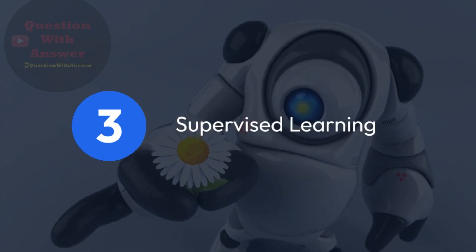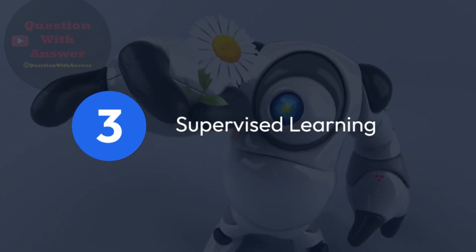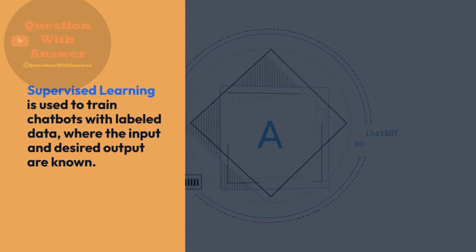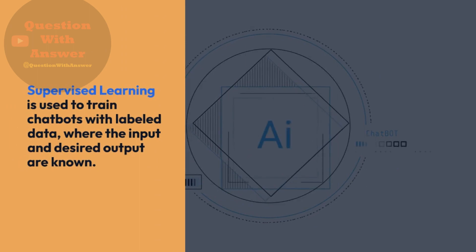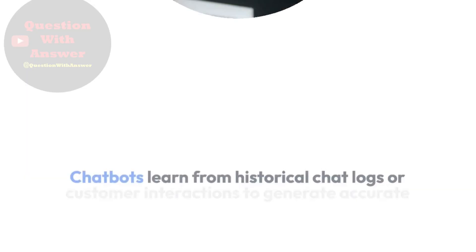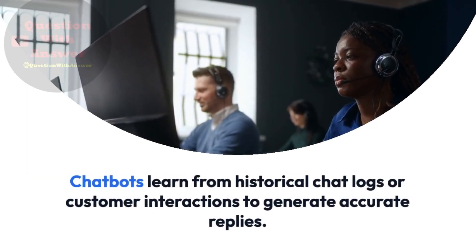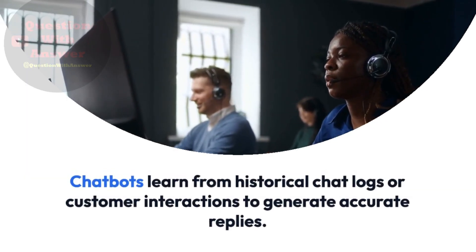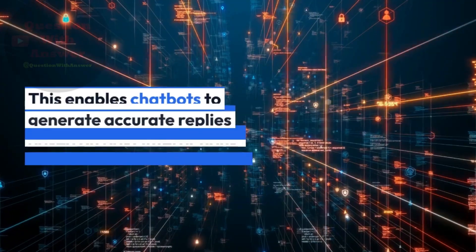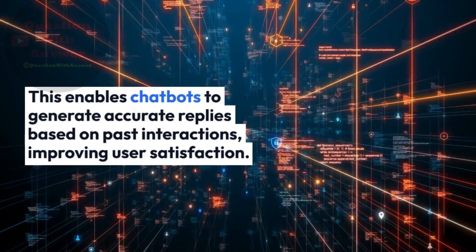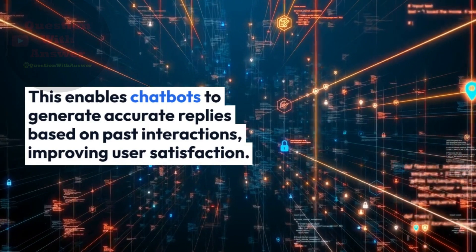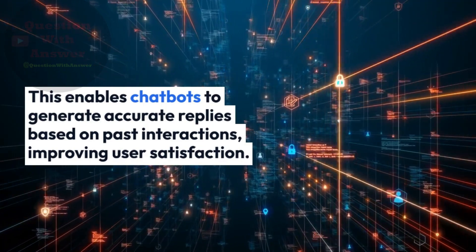3. Supervised Learning. Supervised Learning is used to train chatbots with labeled data, where the input and desired output are known. Chatbots learn from historical chat logs or customer interactions to generate accurate replies based on past interactions, improving user satisfaction.